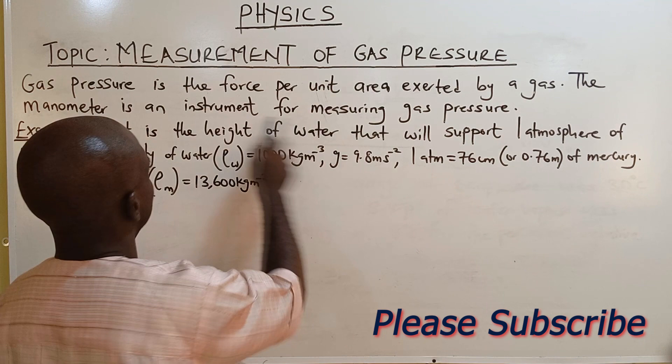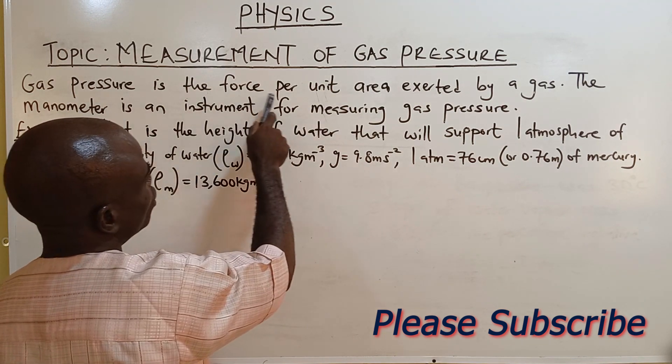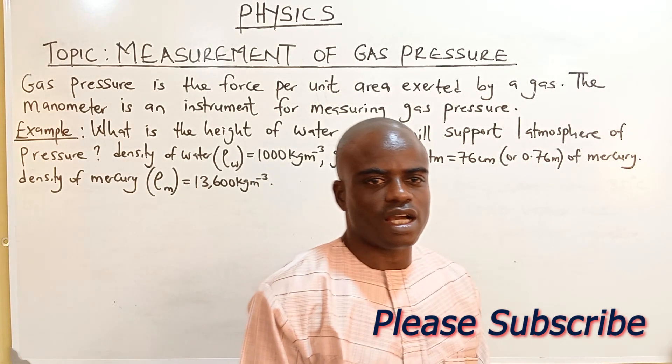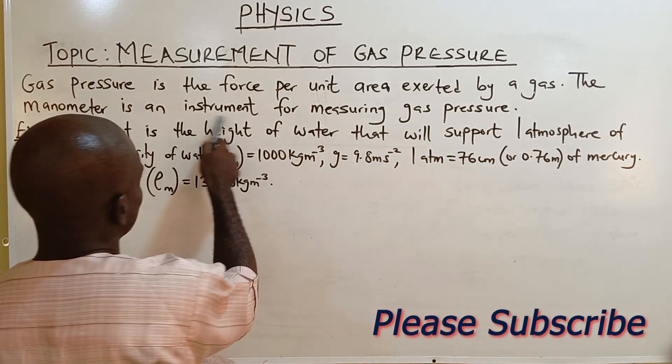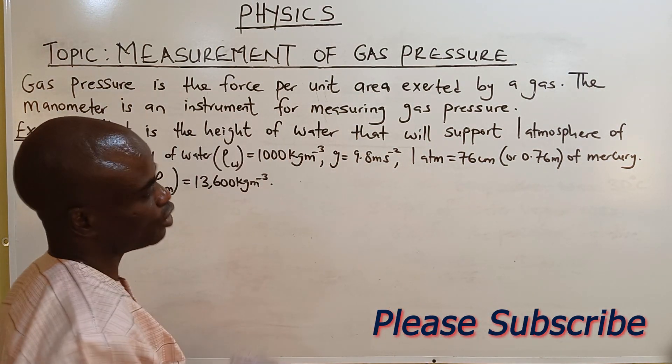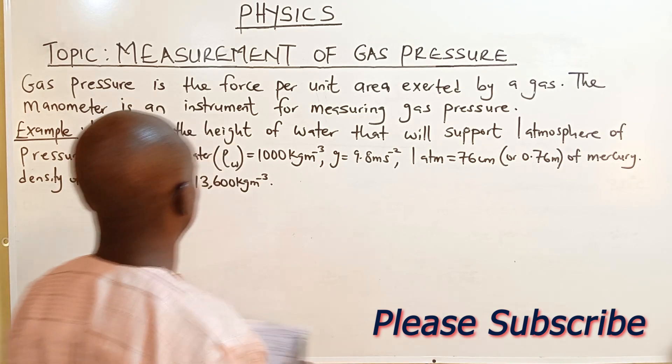Gas pressure is a force per area exerted by gas and the instrument used for measurements is the manometer for measuring the gas pressure. Let's solve the problem.